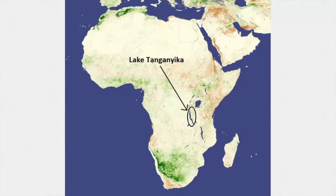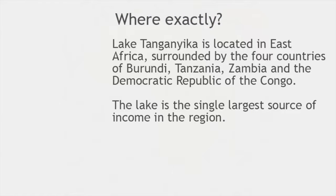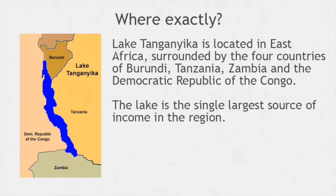Lake Tanganyika is a huge lake that's found in Africa. It's located in East Africa, surrounded by the four countries of Burundi, Tanzania, Zambia, and the Democratic Republic of the Congo. The lake is the single largest source of income in the region.